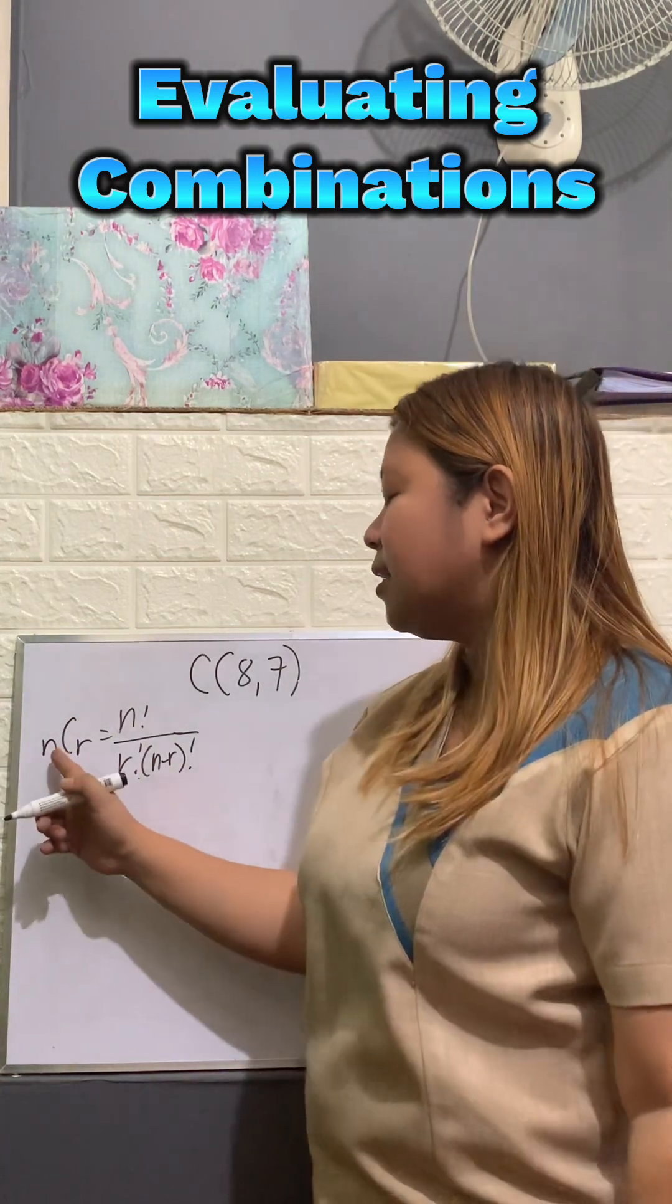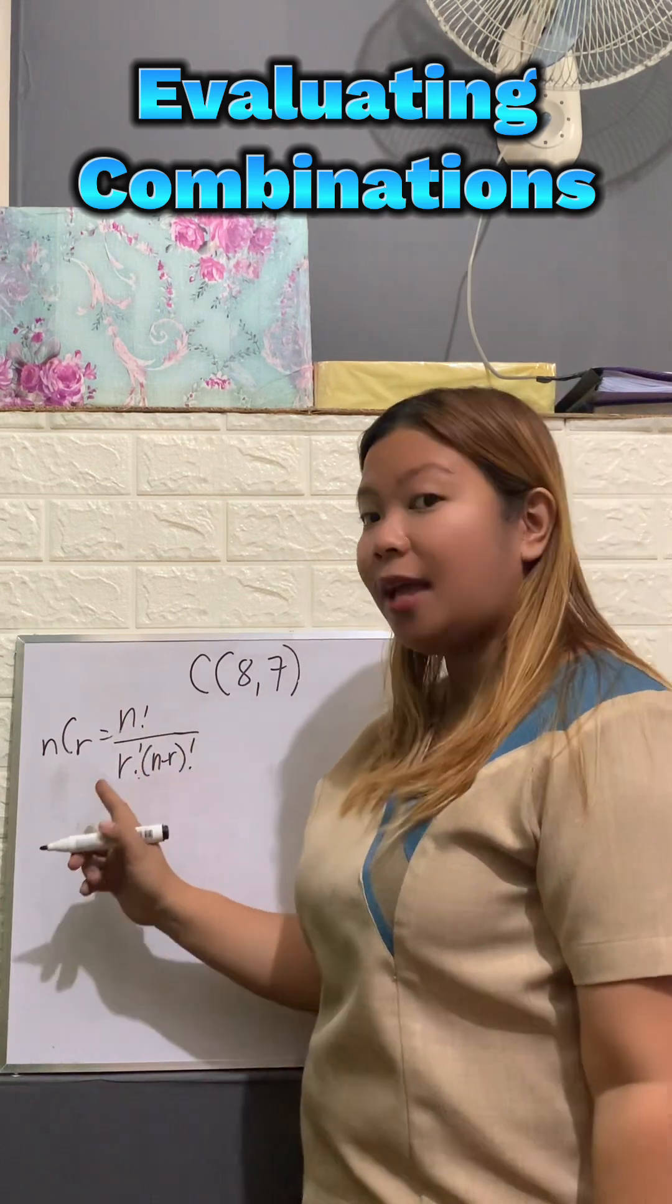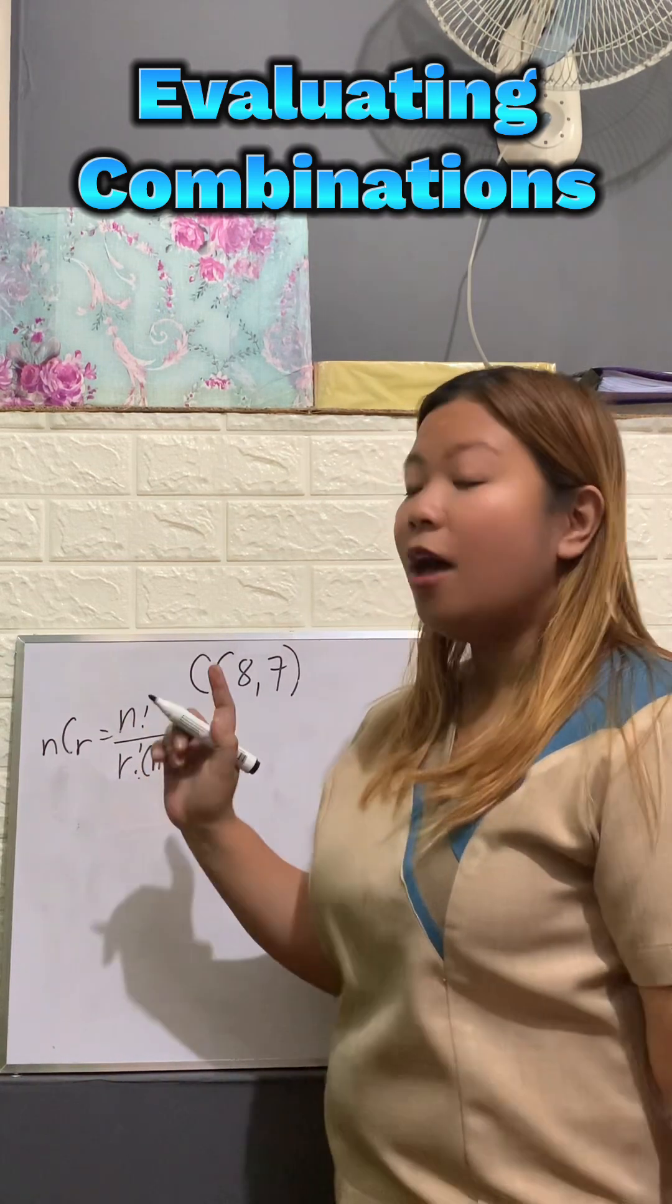So our formula is combination of n taken r at a time is equal to n factorial over r factorial times the quantity of n minus r factorial.